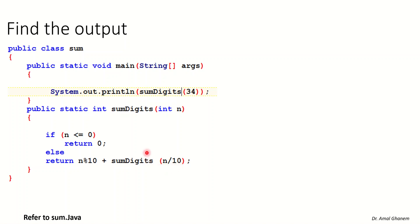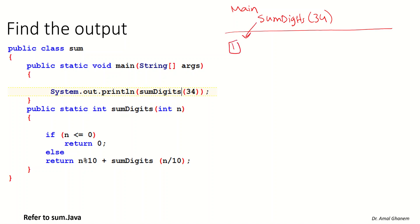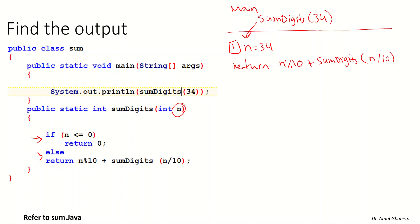We will start with the example from the main and we need to find the output. We expect only one number to be displayed at the end. Starting from the main method, I need to find what is the result of calling someDigit with the number 34. Calling the method for the first time means the value of n will be 34. We check the condition: is n less than or equal to 0? It's not, so we go to the else part. In the else, we return n modulus 10 plus a call to someDigit with n / 10.